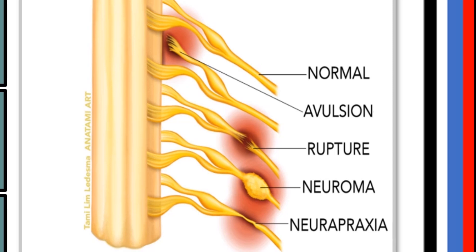Neuroma is another type of nerve injury, which results from scar tissue growing around the injury site, causing pressure on that injured nerve, as you can notice here. The mildest form of nerve injury is neuropraxia, caused by transient compression or stretching of the nerve.